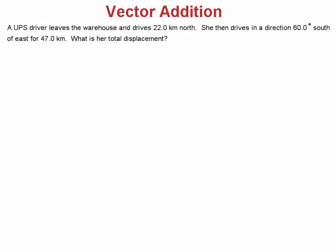We're going to learn how to do vector addition by doing an example, so let's start off by reading it. A UPS driver leaves the warehouse and drives 22 kilometers north. She then drives in a direction 60 degrees south of east for 47 kilometers. What is her total displacement?